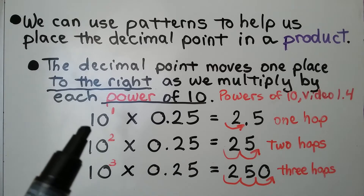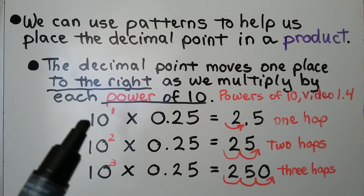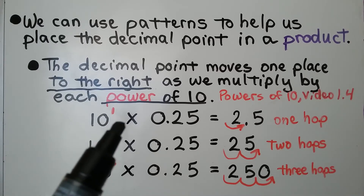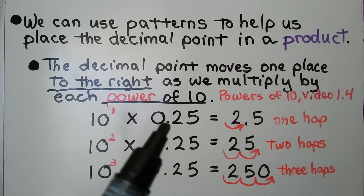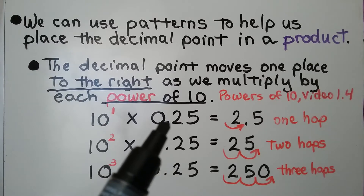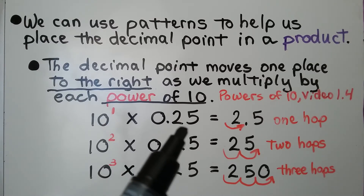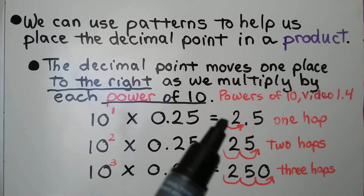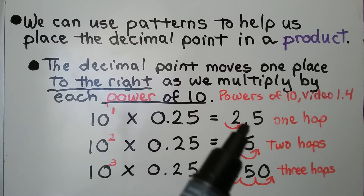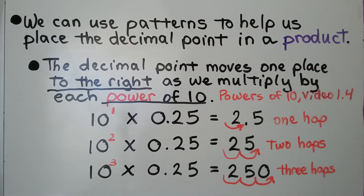We have one power of 10 — it's 10 to the first power — multiplied by 25 hundredths. The decimal point is going to move from between the 0 and the 2 to in between the 2 and the 5. It's going to move one hop. We'll have 2 and 5 tenths.